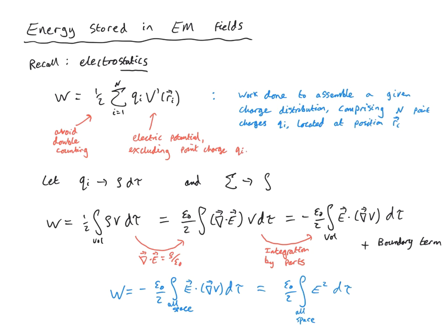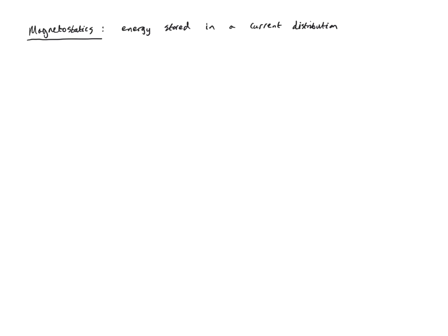Now let's consider what happens in the case of the magnetic field. First we'll consider again the static limit — magnetostatics. Surely there is some energy stored in a particular current distribution, just as there was energy stored in a charge distribution for electrostatics. Can we perhaps view that as energy being stored in the magnetic fields? Immediately there is something strange about this concept, because we know that magnetic forces do no work.